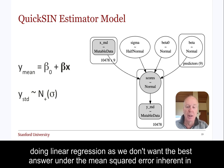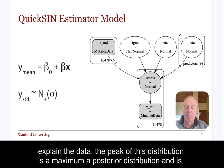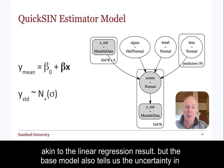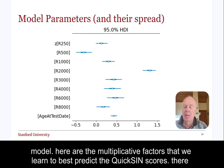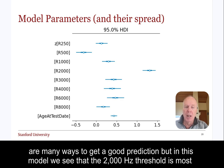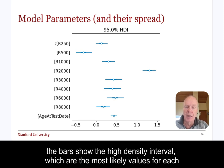Note we are not simply doing linear regression, as we don't want the best answer under the mean squared error inherent in linear regression. We want to understand the distribution of model parameters that best explain the data. The peak of this distribution is the maximum posterior distribution and is akin to the linear regression result, but the Bayesian model also tells us the uncertainty in this decision, which is important so we can judge the accuracy and applicability of the model. Here are the multiplicative factors that we learned to best predict the QuickSyn scores. In this model, we see that the 2000 Hz threshold is most important, perhaps because it says something about the position of the F2 and F3 formants. The bars show the high-density interval, which represents the most likely values for each parameter.